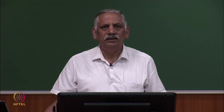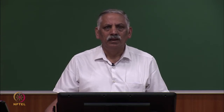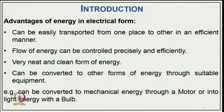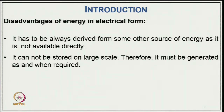Typical examples: electrical energy can be converted to mechanical energy through a motor, or to light energy with a bulb or LED. The disadvantages: it must always be derived from some other source of energy; it cannot be stored on a large scale, therefore it must be generated as and when required. We have large grids in most countries with many consumers and generators, but large-scale storage remains a limitation.